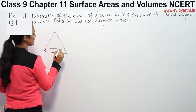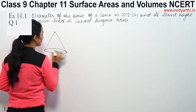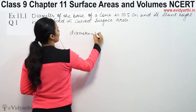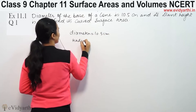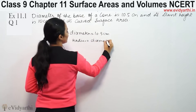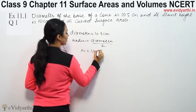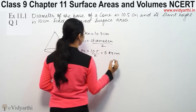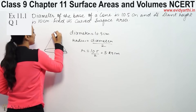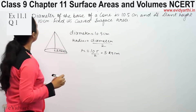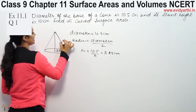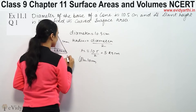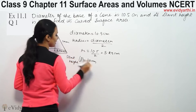The base diameter given is 10.5 cm. So the radius will be diameter divided by 2, which is 10.5 divided by 2, giving us 5.25 cm. The slant height is also given — slant height, which we denote as L, is 10 cm.